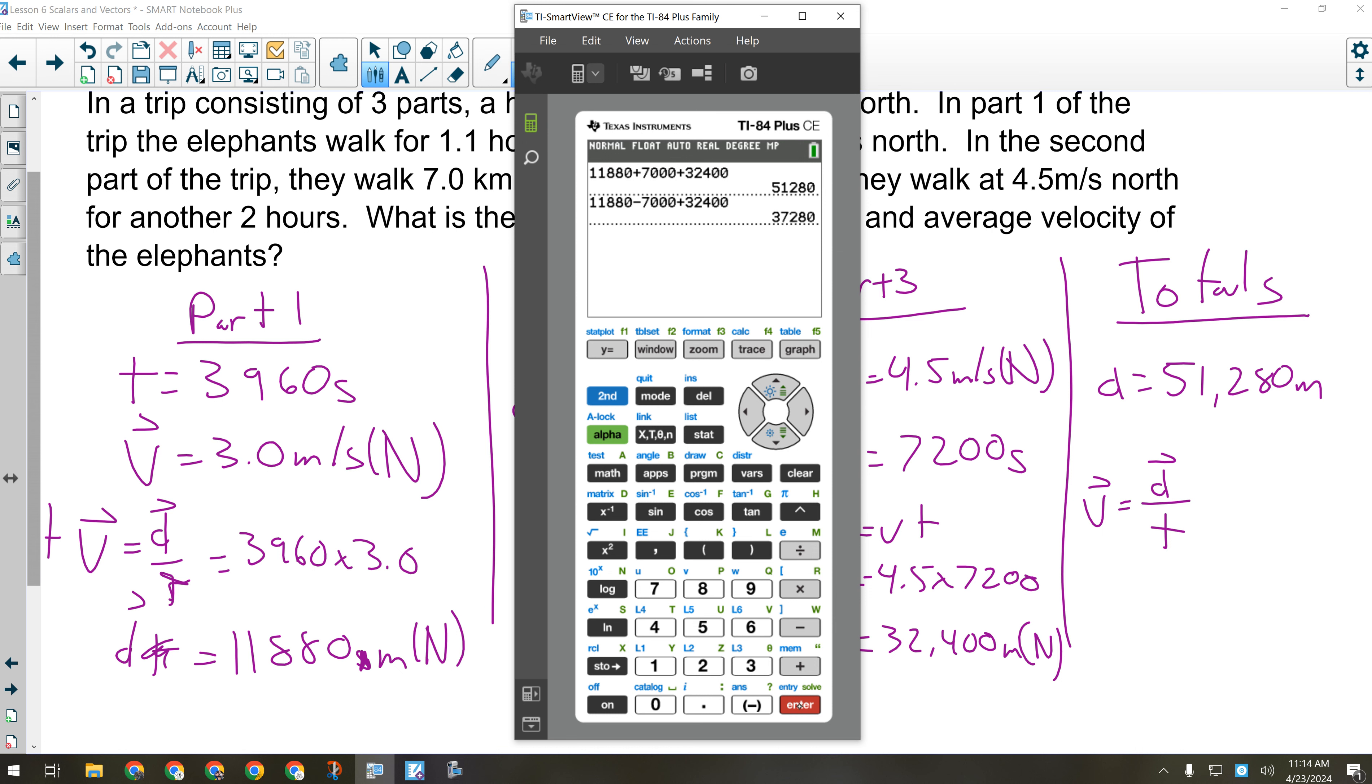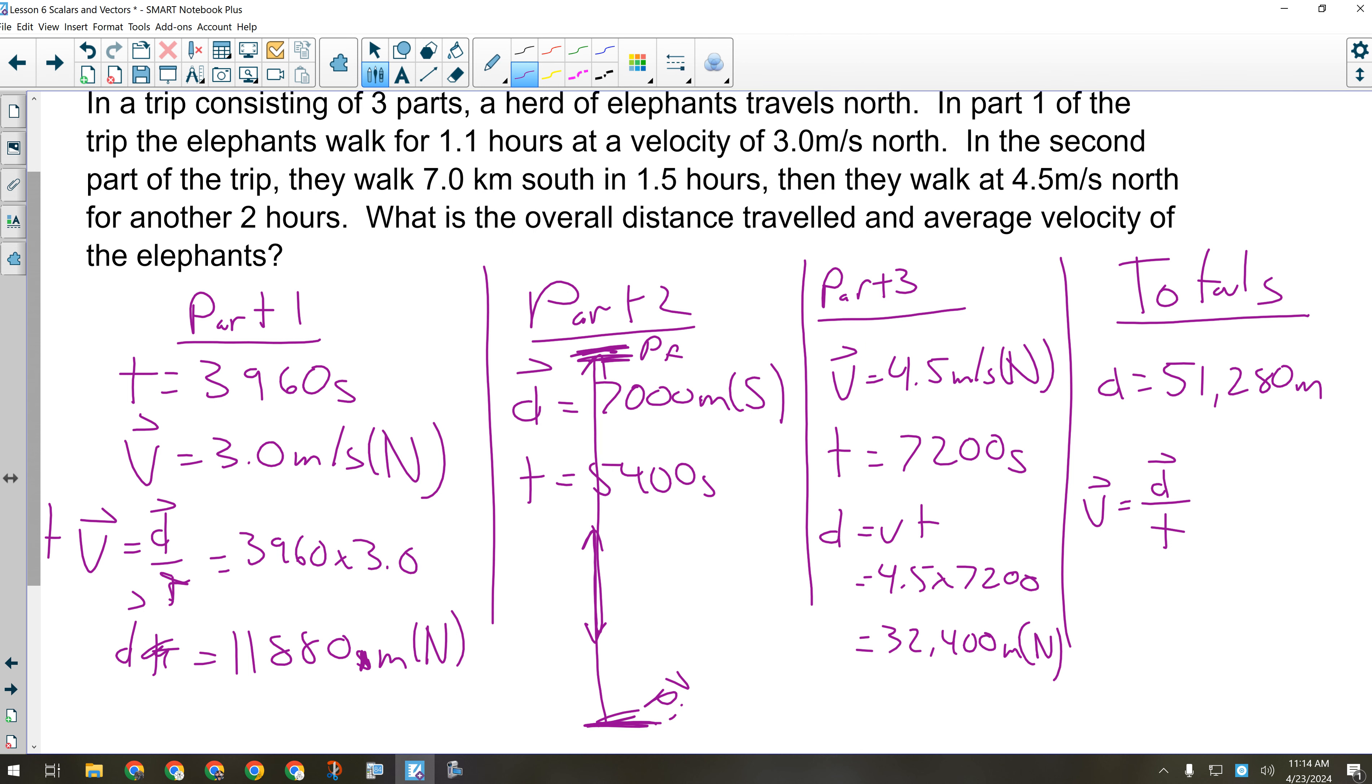Now, I've got my displacement or rather the elephant's displacement. They are now 37,280 meters north of where they started. And if I divide that by their total time which I haven't calculated yet so I'll have to put it in brackets. That will be 3,960 seconds plus 5,400 seconds plus 7,200 seconds. So, the average velocity of the elephants is 2.25 meters per second north.